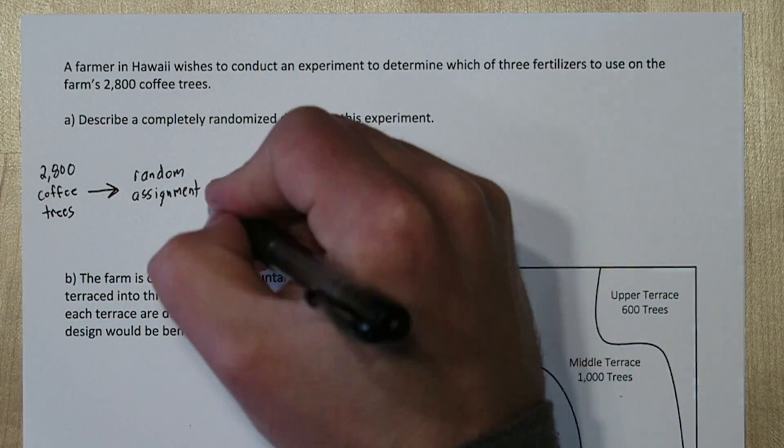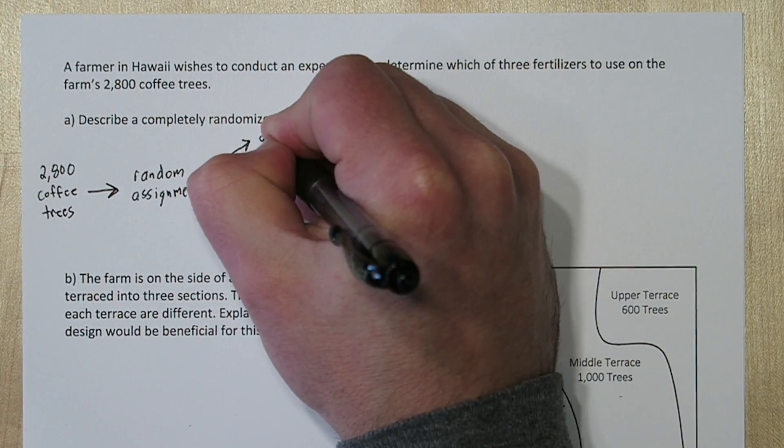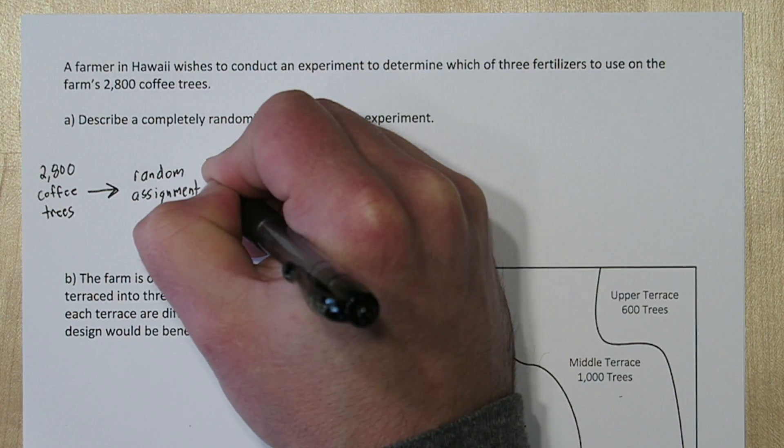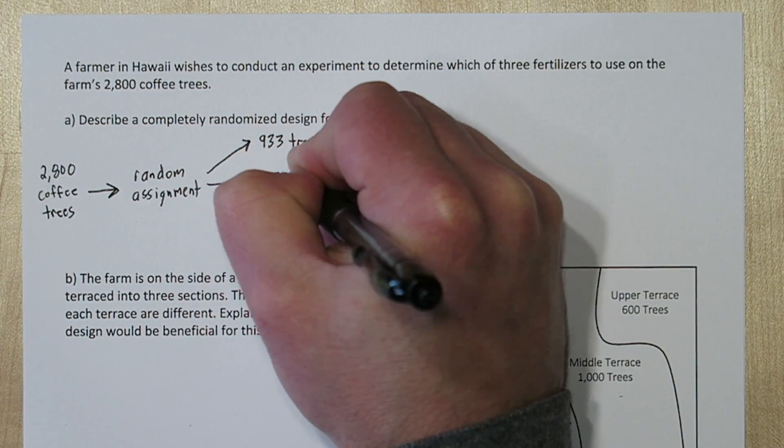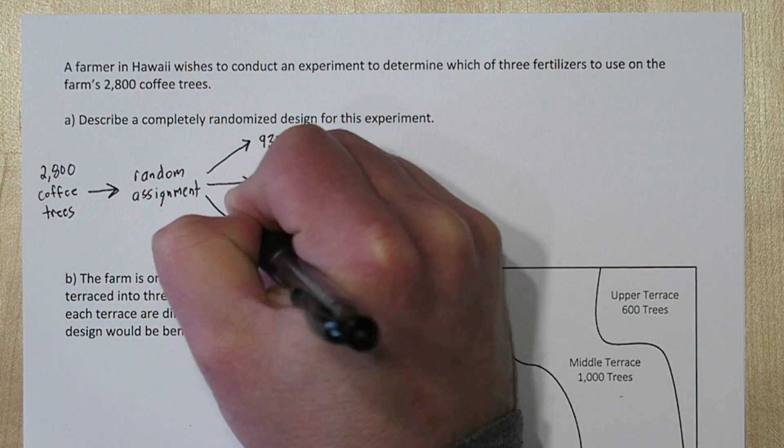Now unfortunately it's not divisible by three, so we're going to have one group of 933 trees, another of 933 trees, and our final group will have 934 trees.